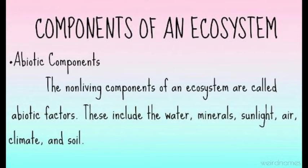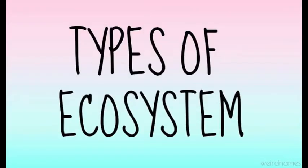The non-living components of an ecosystem are called abiotic factors. These include water, minerals, sunlight, air, climate, and soil. There are two types of ecosystem: the aquatic ecosystem and the terrestrial ecosystem.